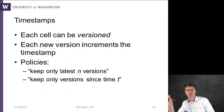And then each cell can be versioned, which is the third part of that key lookup, right? Row ID, column name, and timestamp. And each new version increments that timestamp. And so here you can enact different kinds of policies where you only keep the latest N versions or you keep only the versions since a given timestamp.